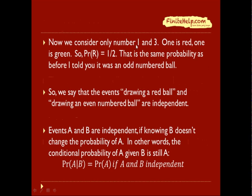Since we know it's odd, now we consider only 1 and 3. Number 1 is red, number 3 is green, so the probability of red is 1/2.